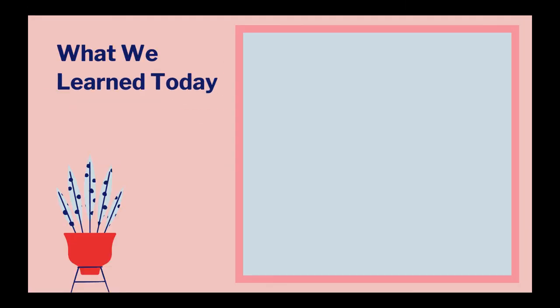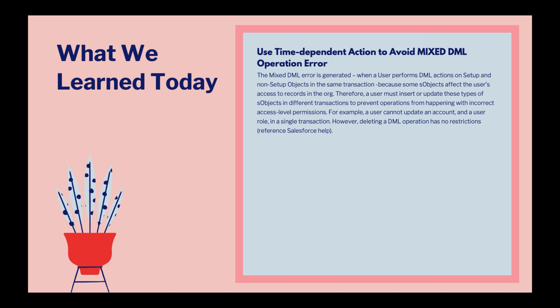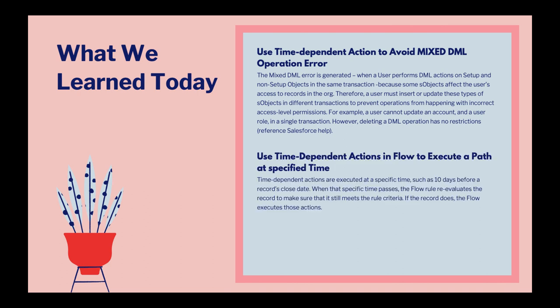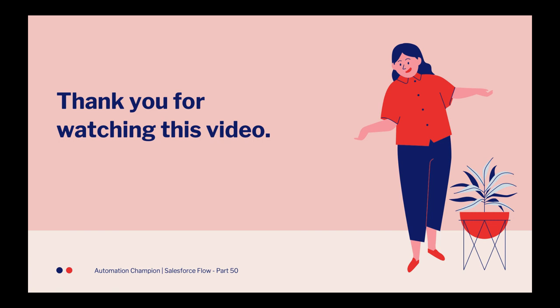To summarize what we learned today: first, you can use time-dependent actions to avoid mixed DML operation errors in Salesforce — to separate transactions, use time-dependent actions in the flow. Second, you can add time-dependent actions to execute a path at a specified time — for example, one path executes immediately and another after five days. Third, how to create a bulk-safe flow: do not perform DML operations inside the loop; instead, use Assignment elements to build a collection and insert the records at the end. Thank you for watching — please subscribe, like, and share this video.